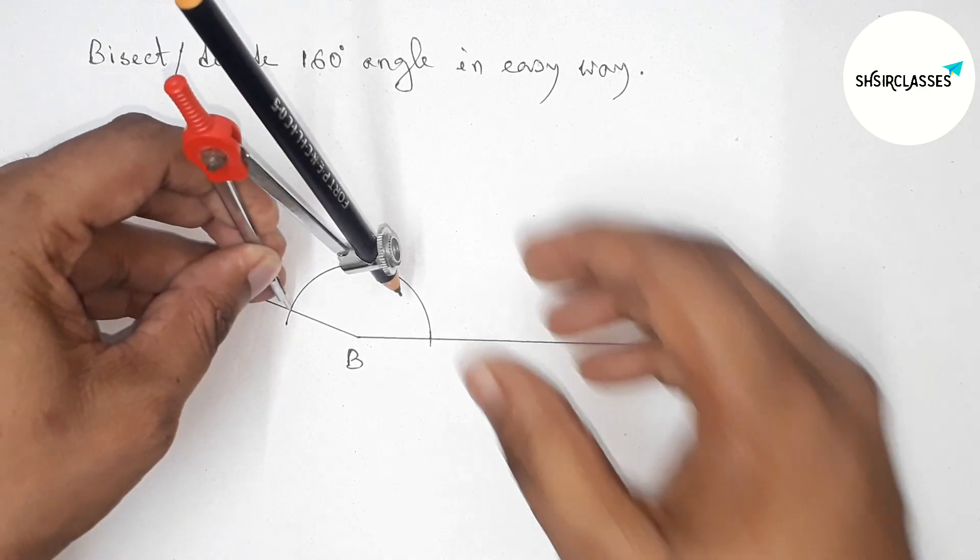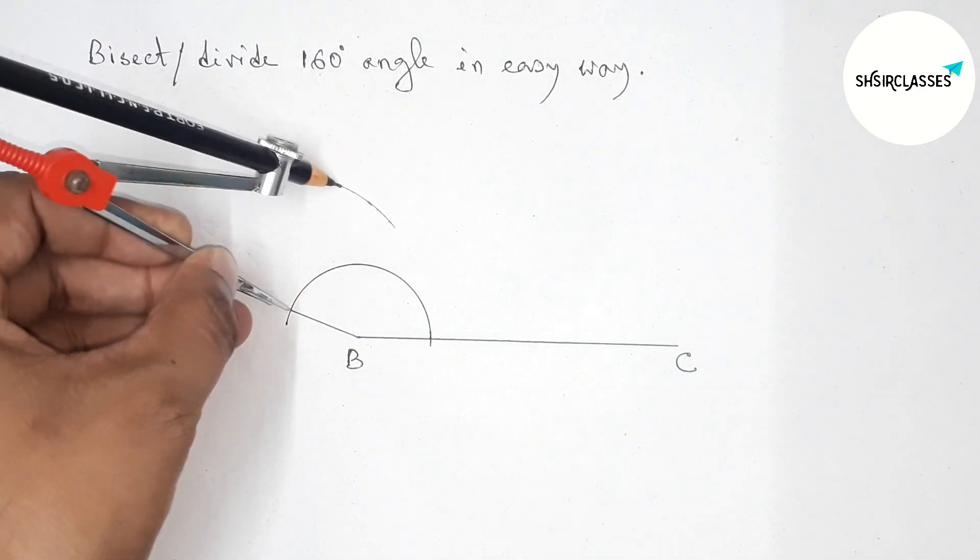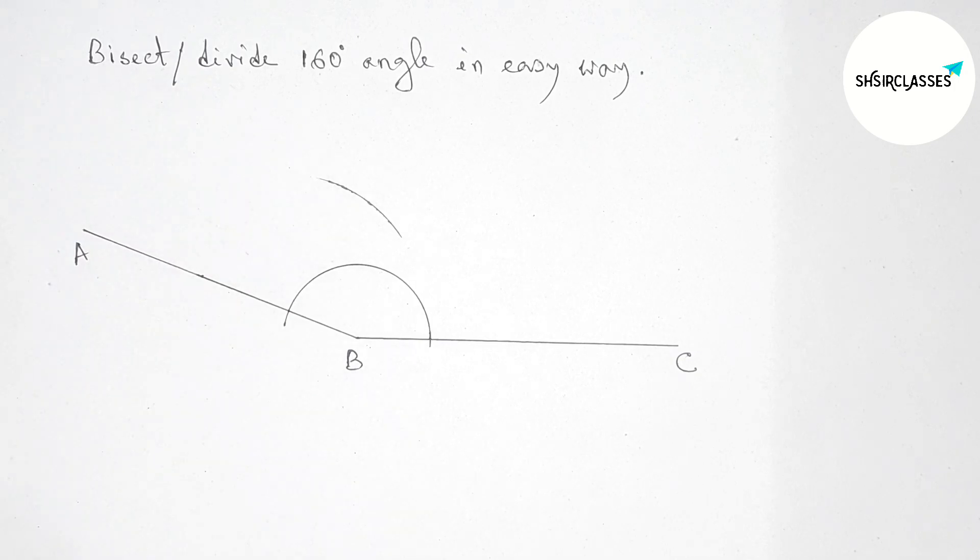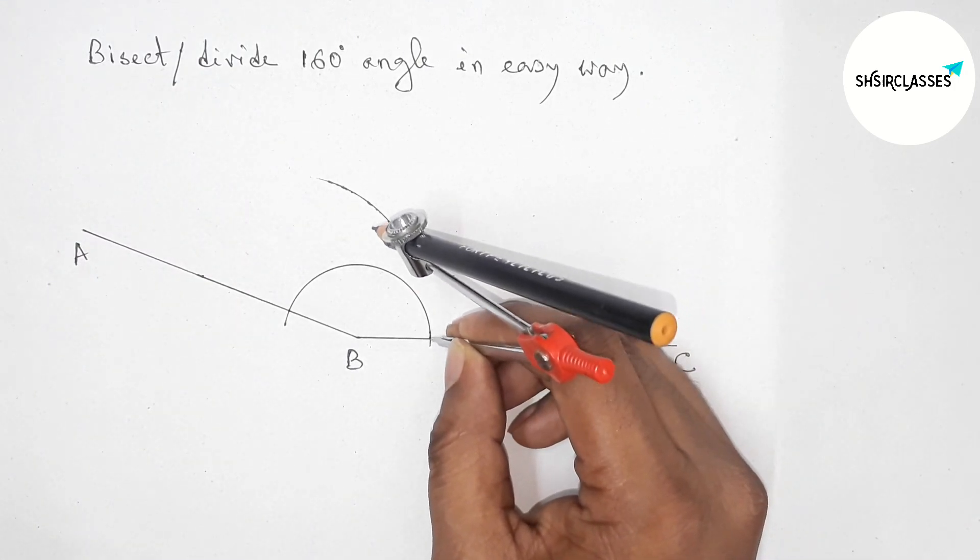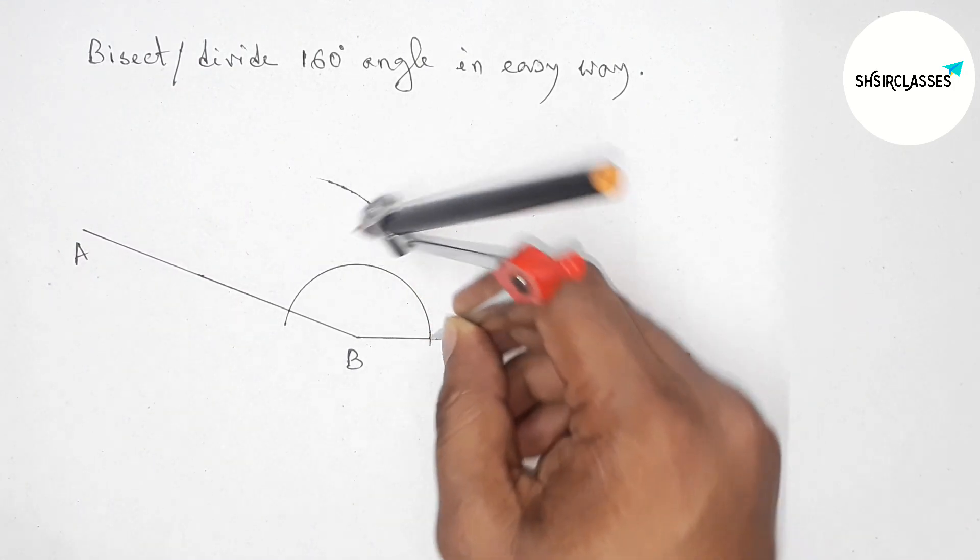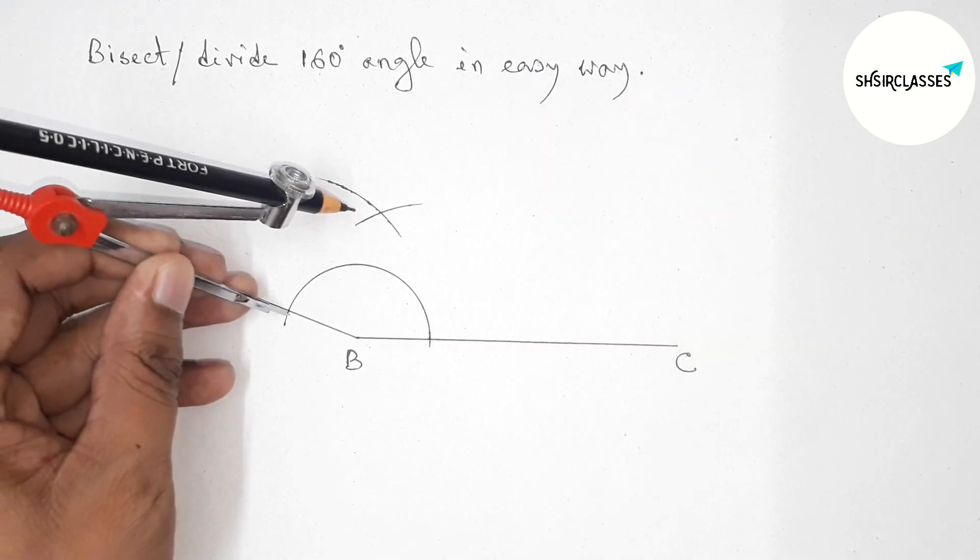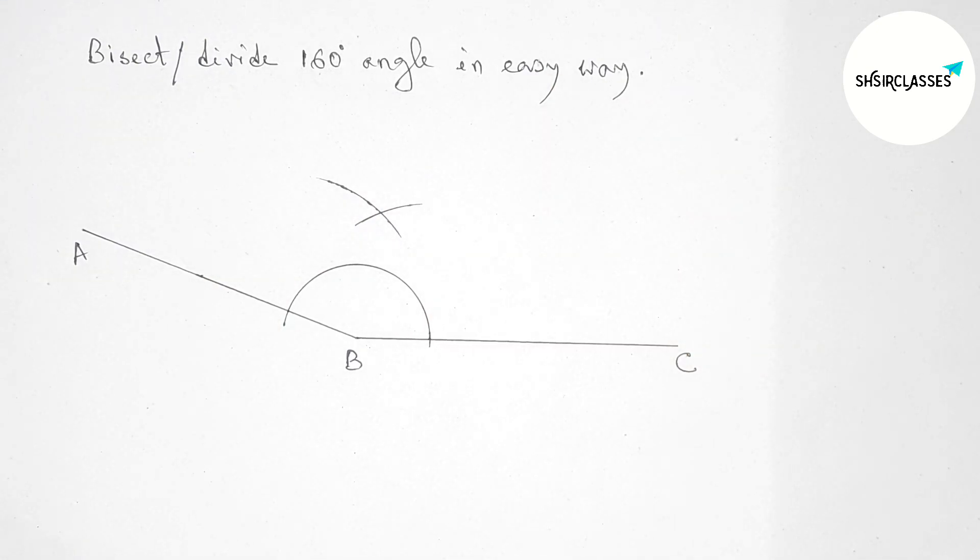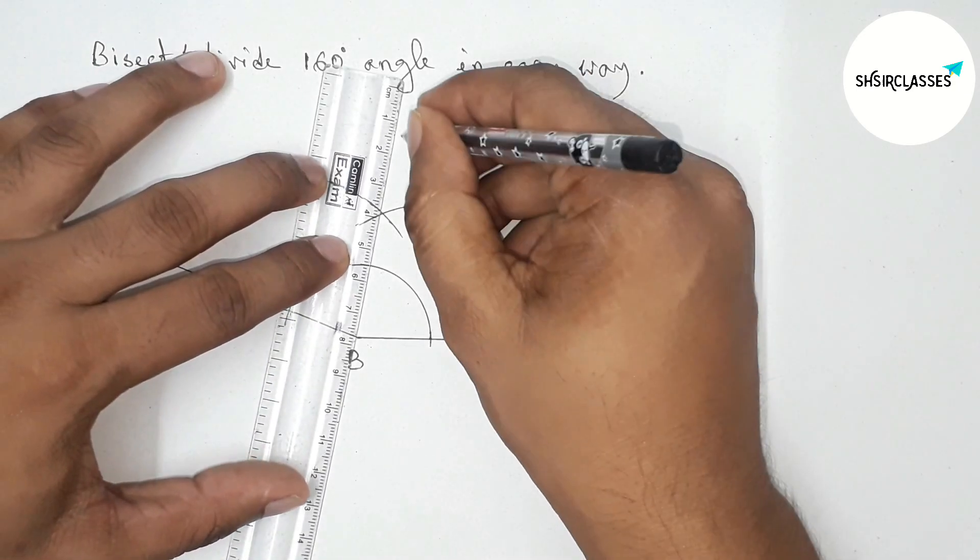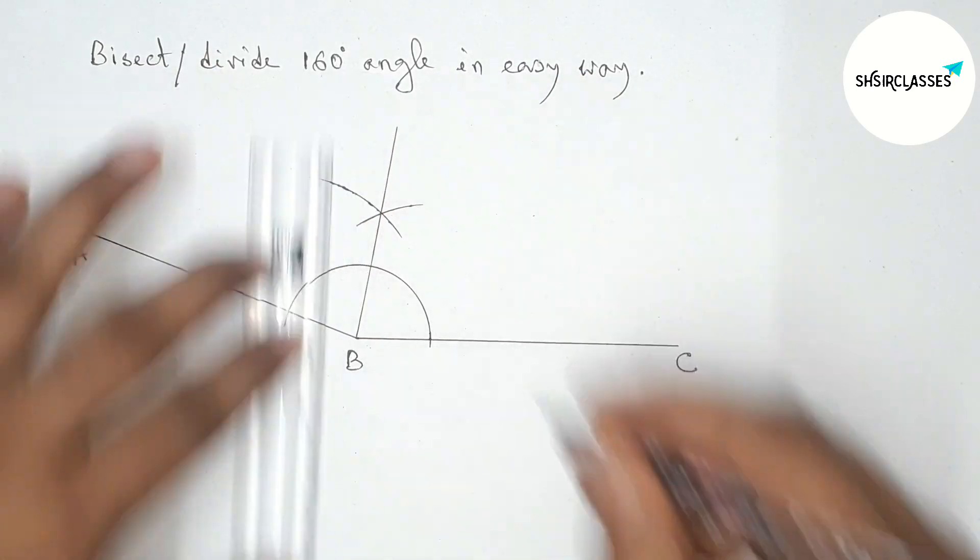Now putting the compass here and taking greater than half of this and drawing an arc here. Again with the same length, putting the compass here and cut here. So perfect. Now joining this line which bisects the angle ABC.